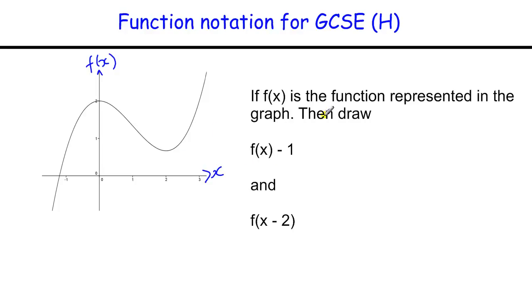And if I want to then draw f(x) minus 1, I can use my transformations of graphs, which I know that if I take one away from the function on the outside, what I'm really doing is just taking one off all the points. So whatever value they were before, they're going to be one below where they were before. So it's going to be very roughly looking a bit like that.